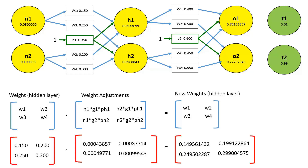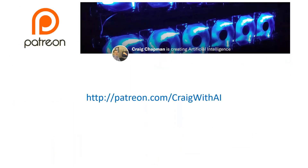As a side note, backpropagation can continue in networks with more layers by simply repeating the steps of copying back the gradient values and calculating the partial derivatives with regards to the respective neurons. Short but sweet, that's it for this part. My name is Craig Chapman, and thank you for watching.